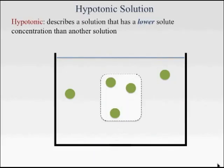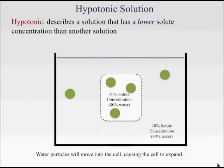A hypotonic solution describes a solution that has a lower solute concentration than another solution. Again, taking the same cell with a 20% solute concentration and 80% water and putting it into a hypotonic solution that only has a 10% solute concentration and therefore is made of 90% water.